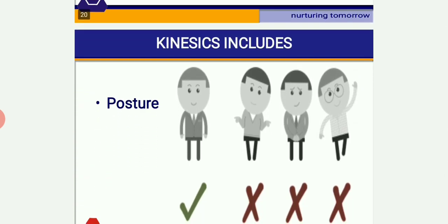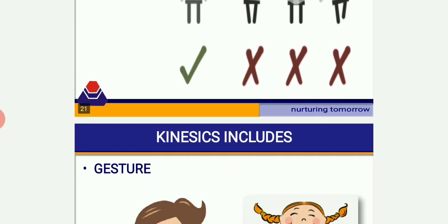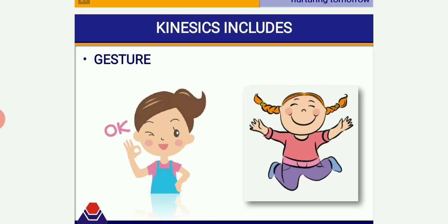Kinesics also includes posture — the way you stand or sit, how the body is maintained in a particular position. When standing, you should stand straight and not slouch; when sitting, you should not lean back in the chair. Posture has to be maintained accurately because it also helps you to project a proper voice.